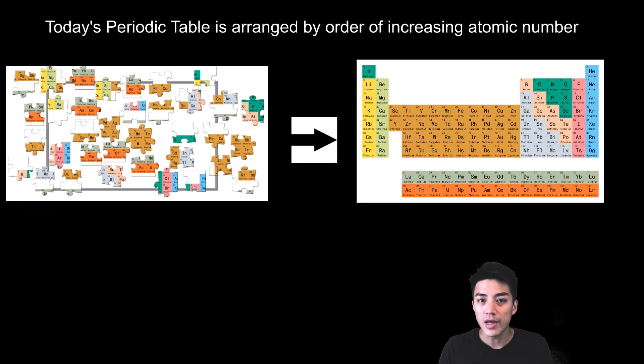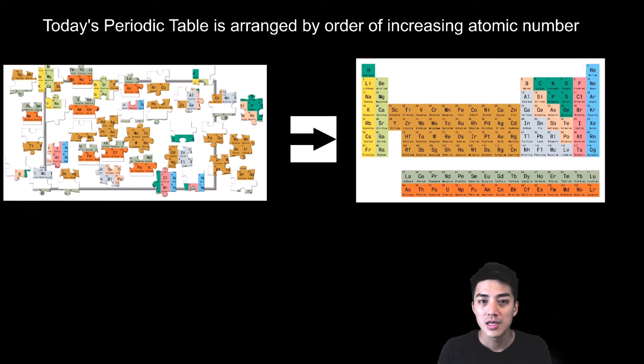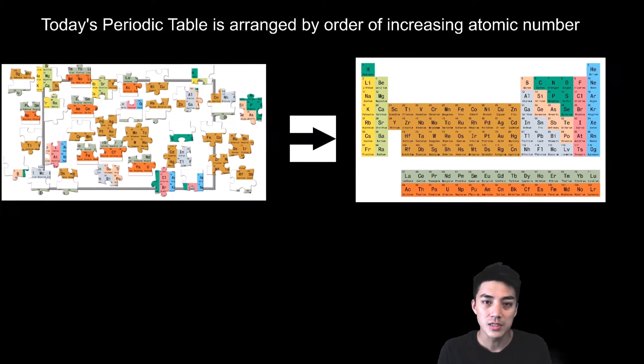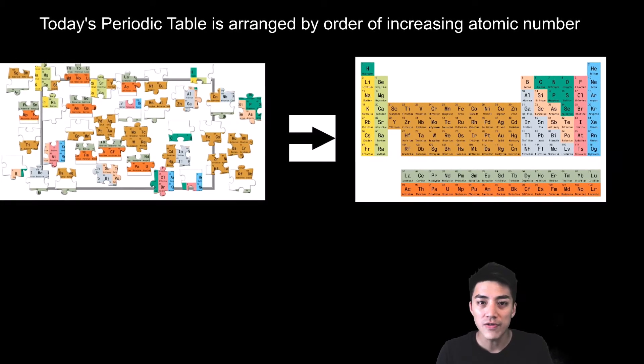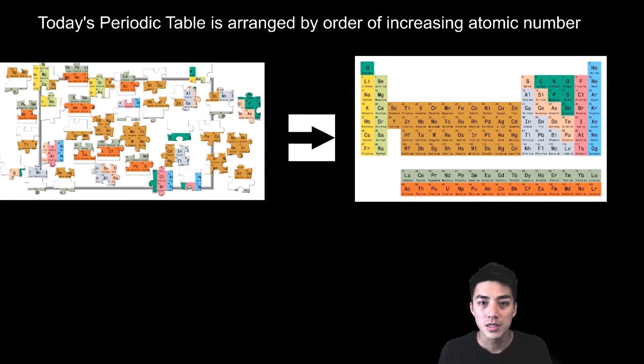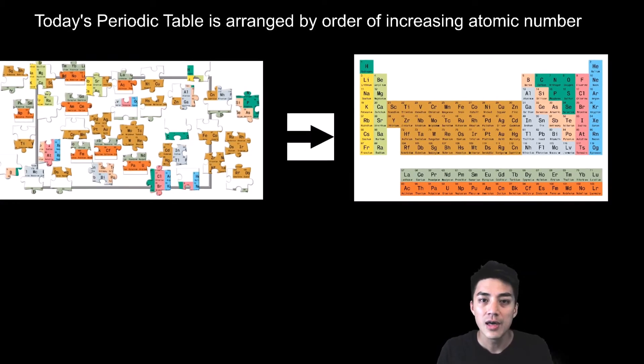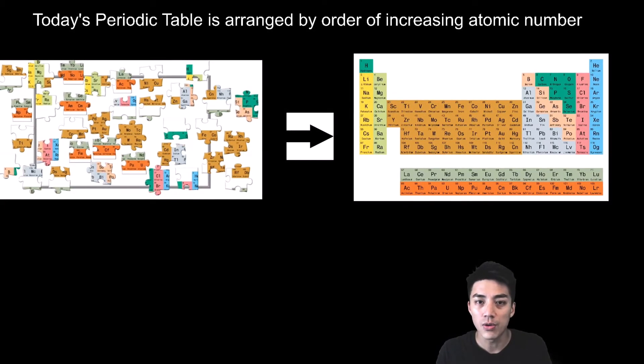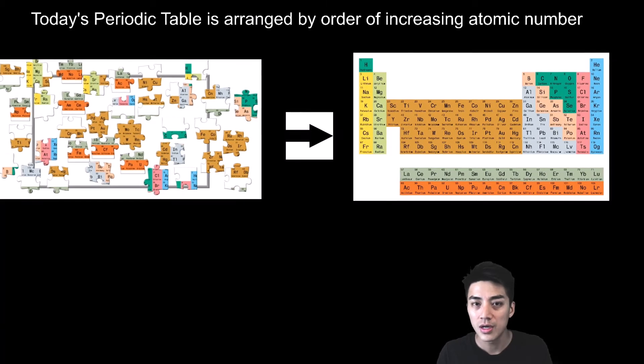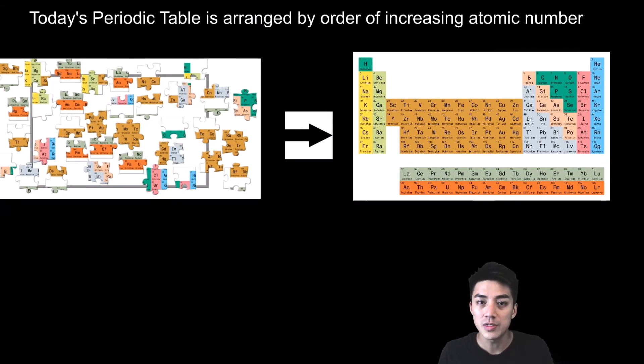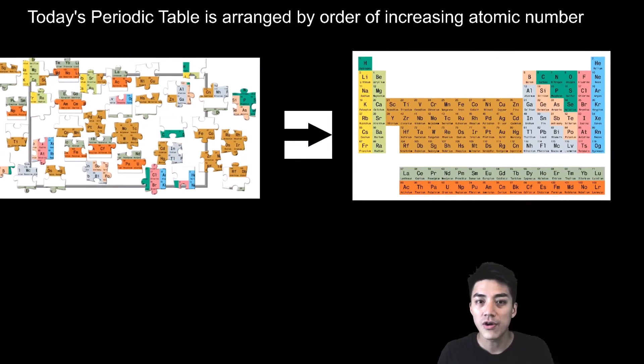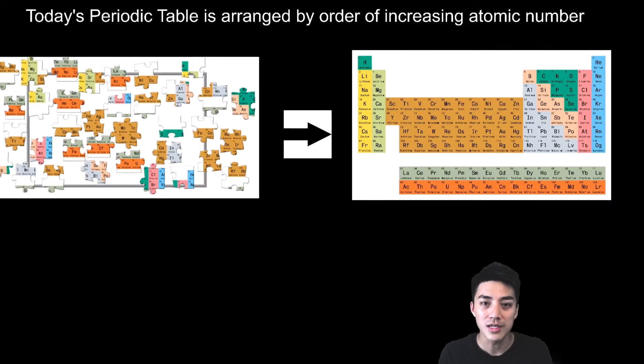Mendeleev arranged his elements by order of increasing atomic mass, but this led to a few discrepancies where elements weren't the right families and they weren't in the right groups. However, by the 20th century, modern scientists had figured out that if you arrange the elements by order of increasing atomic number, this would solve many of those discrepancies and problems. And thus, we figured out the puzzle of the periodic table.